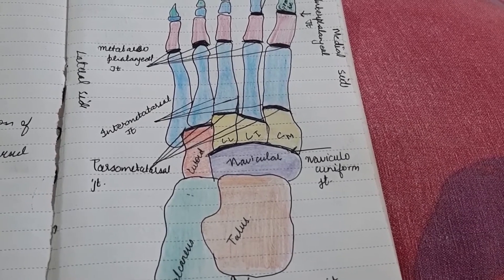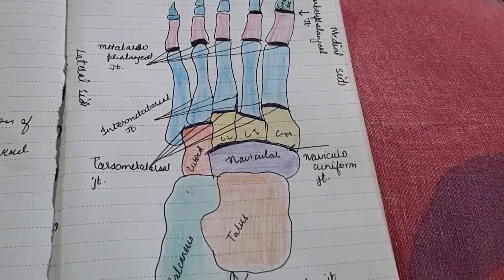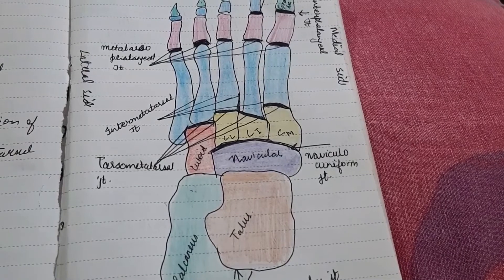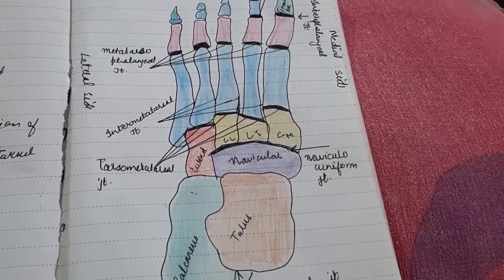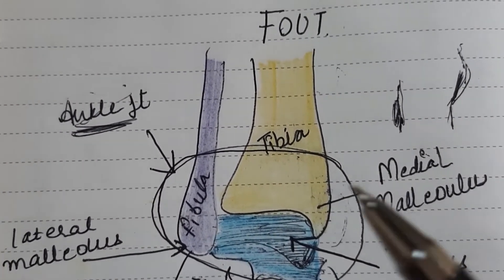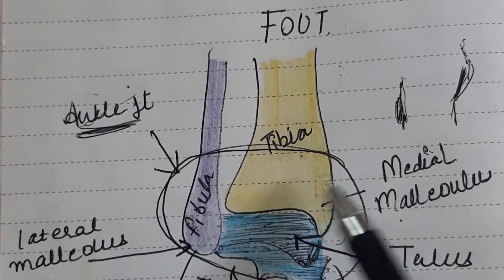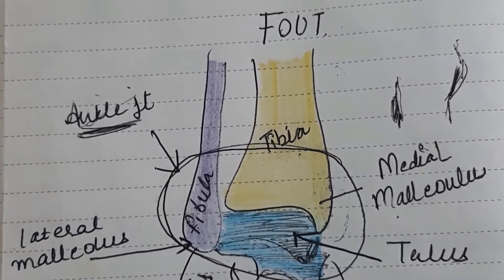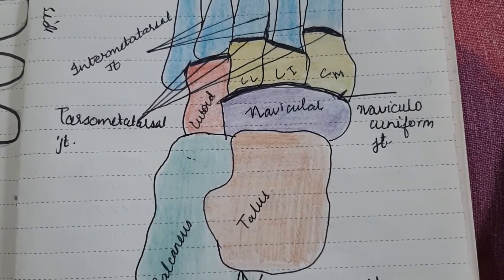Now we will see the joints of the foot. The joints are categorized into three parts: hind foot, mid foot, and forefoot. Starting from the hind foot — there is only one joint, which is the articulation of the talus, tibia, and the lateral malleolus, forming the ankle joint. So in the hind foot you will see only one joint.